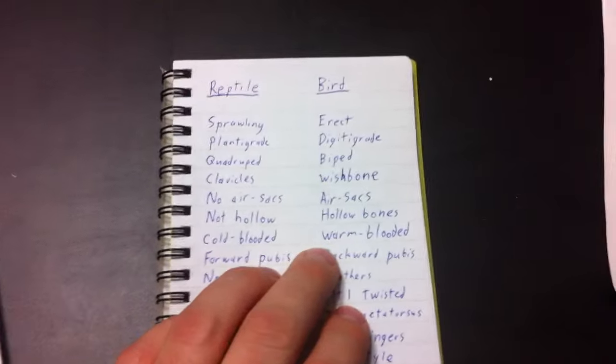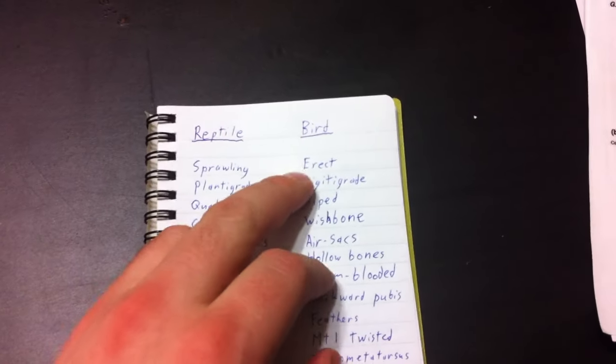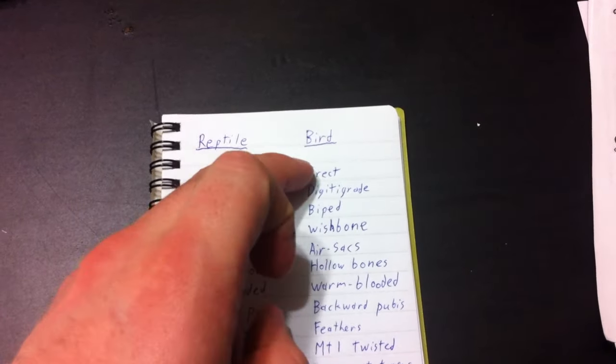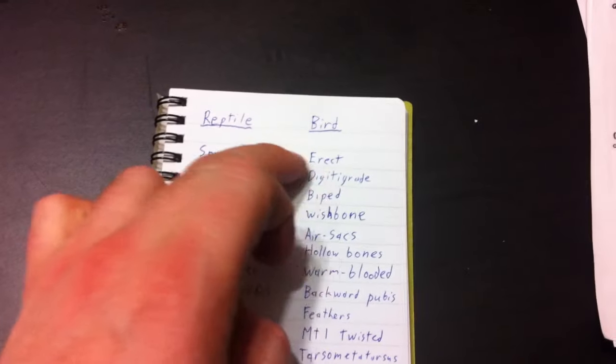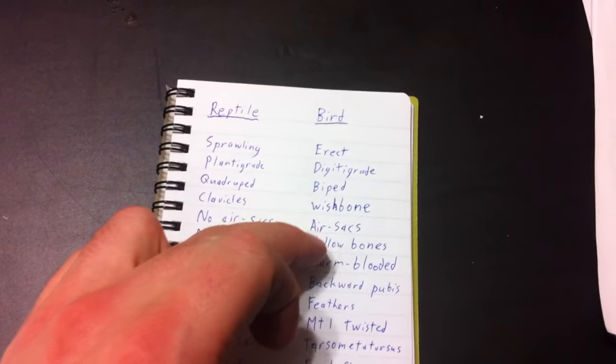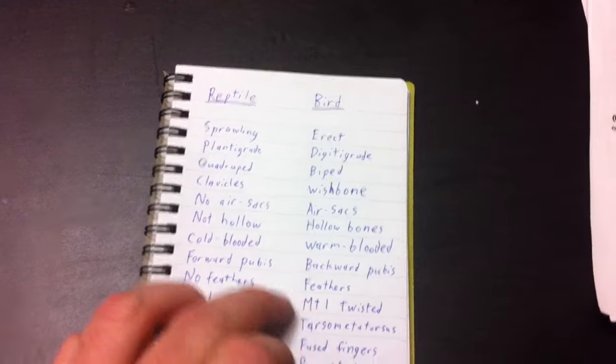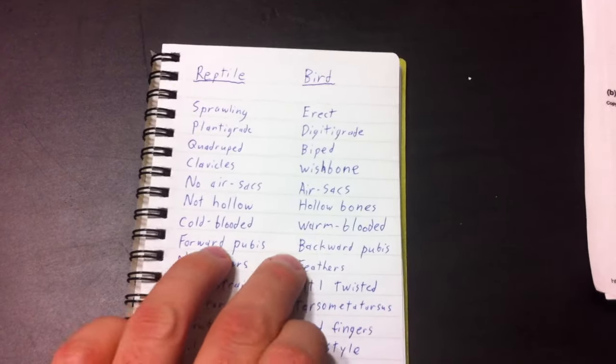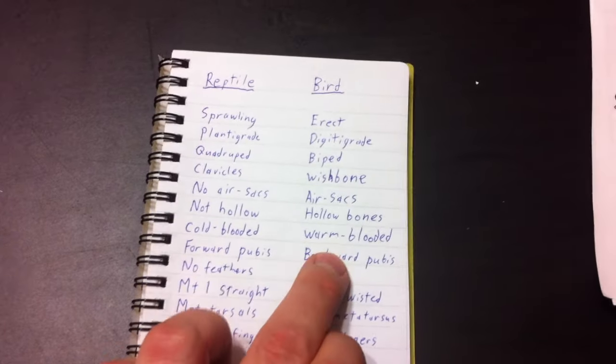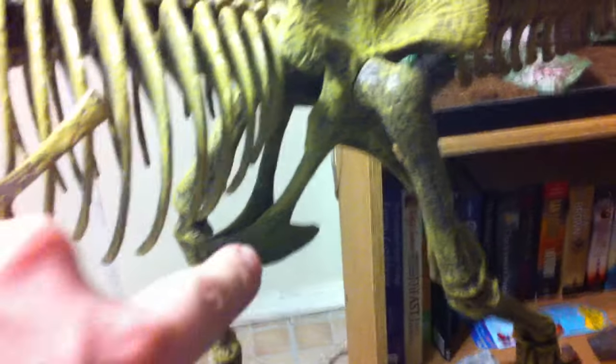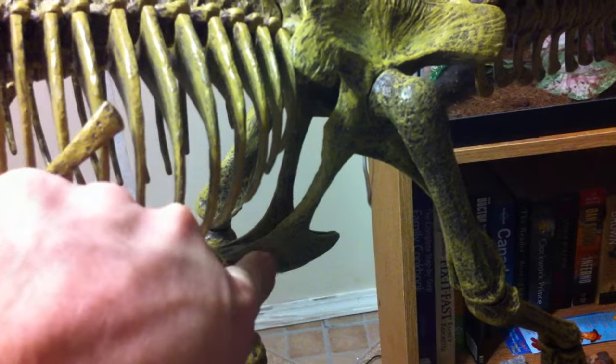So, okay, so do we have to start calling theropods birds? Well, no. We can just keep extending the definition of reptile. We can just cross these items off our list. There's still features that distinguish it from birds. So, reptiles have a forward-facing pubis, while birds have a backward-facing pubis. And you can see here that T. rex very clearly has a forward-facing pubis, distinguishing it from birds.